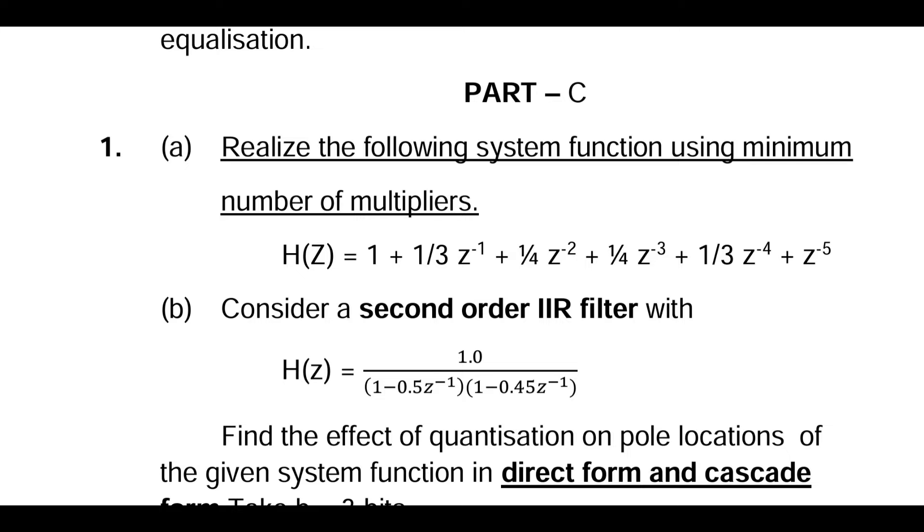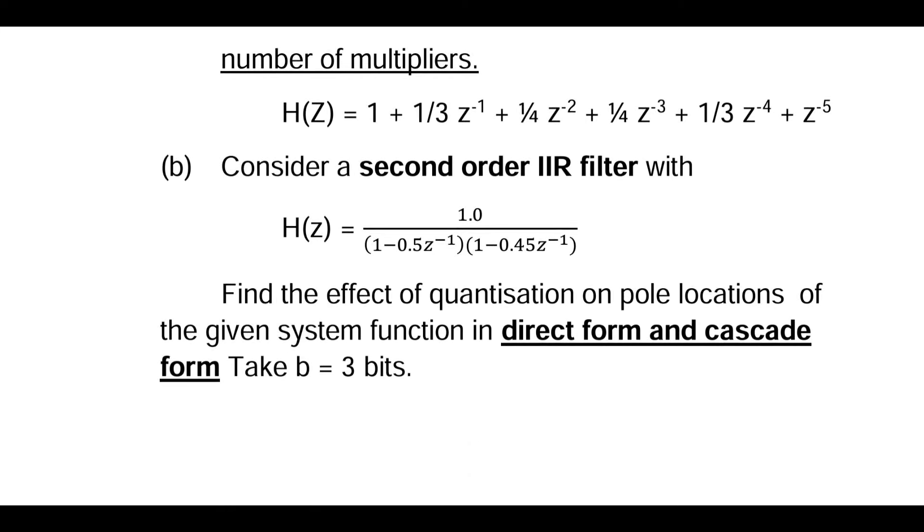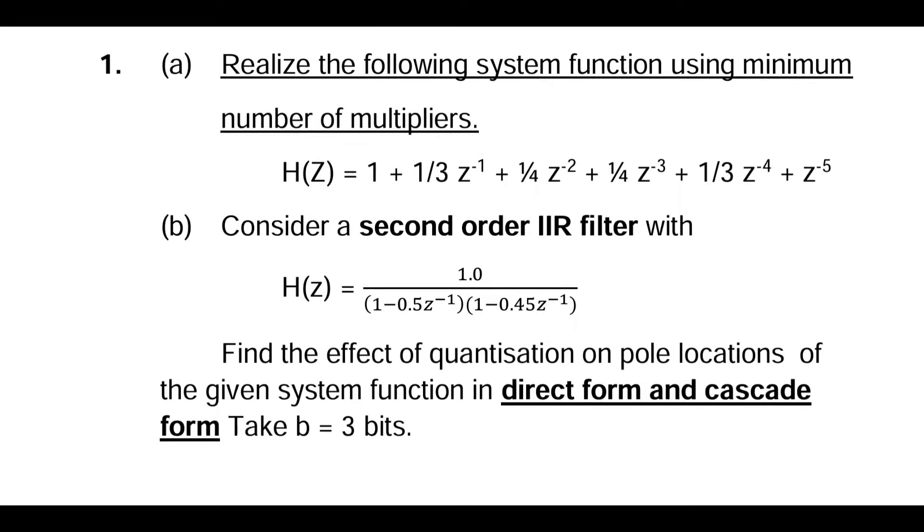minimum number of multipliers. Next, consider a second-order IIR filter with H(z) function. This is the direct form and cascade form realization. Take b = 3 bits.